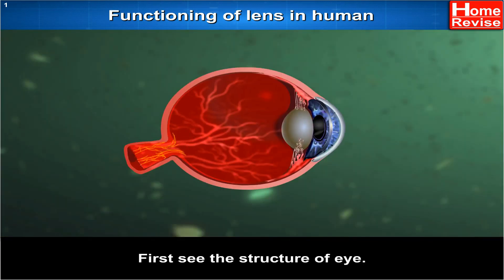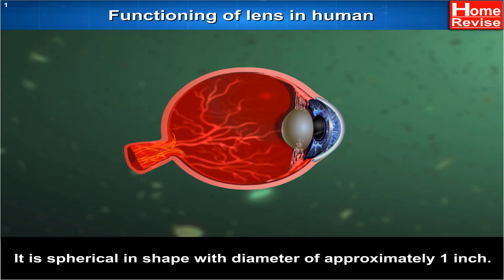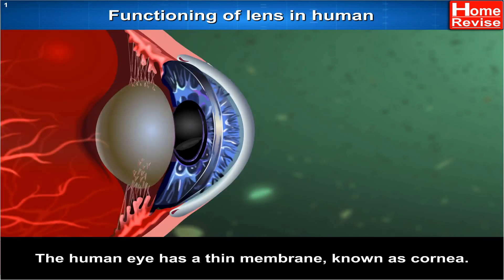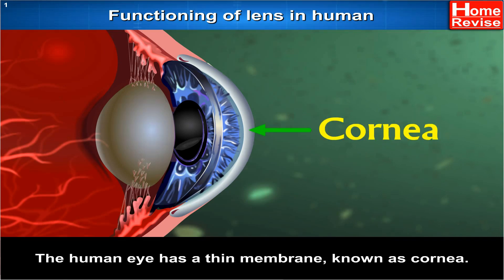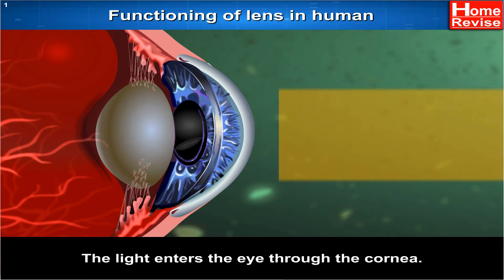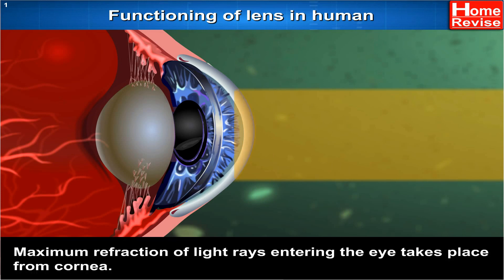First, see the structure of the eye. It is spherical in shape with a diameter of approximately 1 inch. The human eye has a thin membrane known as the cornea. The light enters the eye through the cornea. Maximum refraction of light rays entering the eye takes place at the cornea.